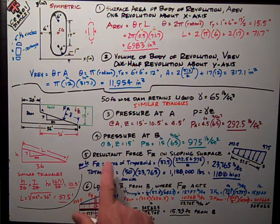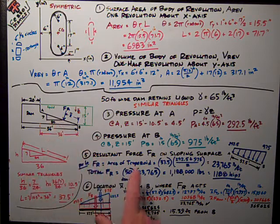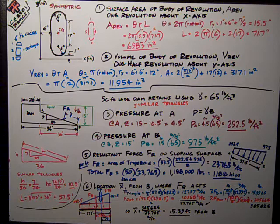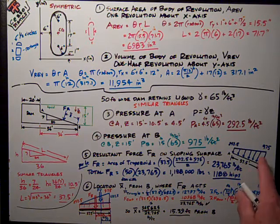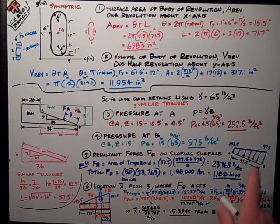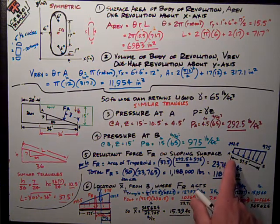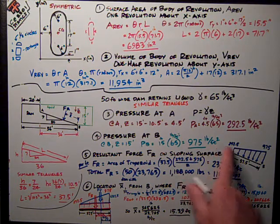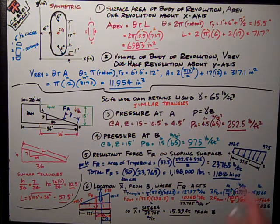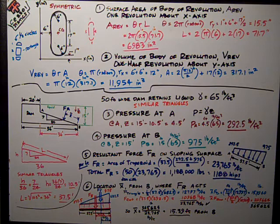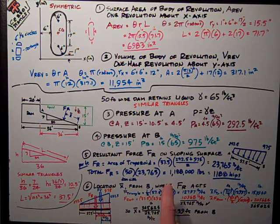Finally, number 5, I want the resultant force, F_R, on the sloping surface. So what I've got is really just a distributed load problem. The quick and easy way is, here's the pressure at A, 292.5, the pressure at B, 975. The area of a trapezoid is what that resultant force is.